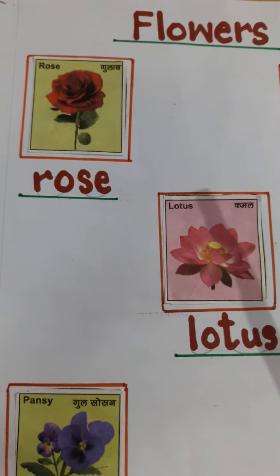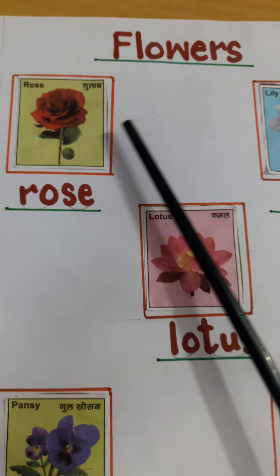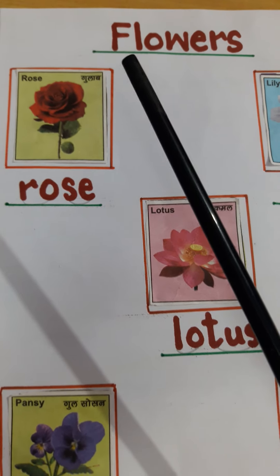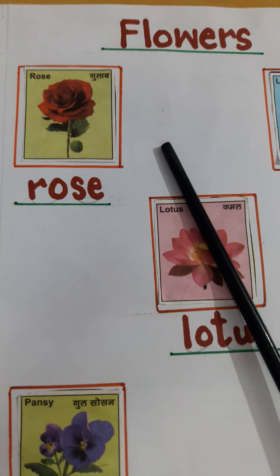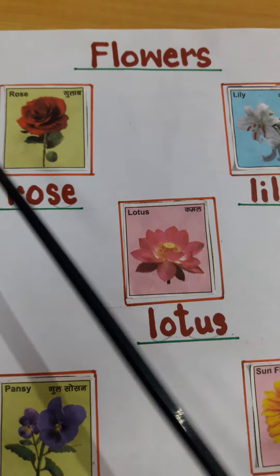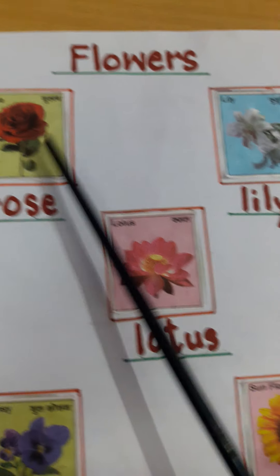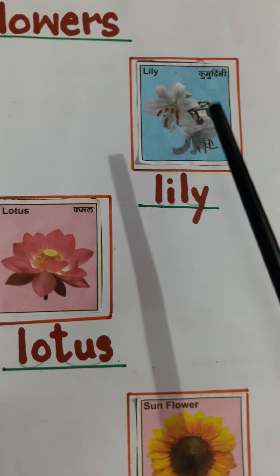R-O-S-E. Rose. Rose means kya hota hai? Phool. Iska color kya hota hai? Red color ke hota hai, white color ke hota hai, rose yellow color ke bhi hota hai. There are many colors. Now rose ke baad kya hai? Lily.